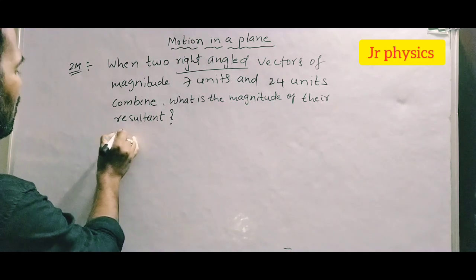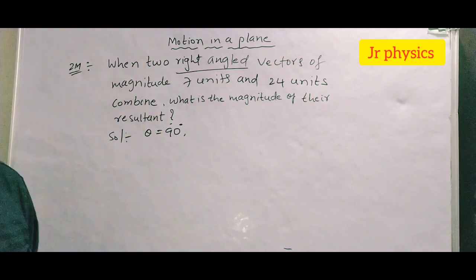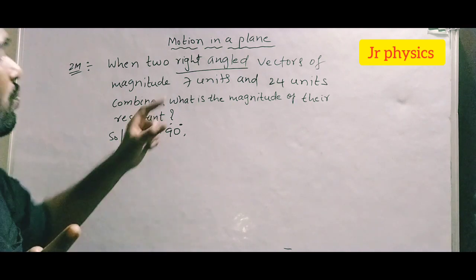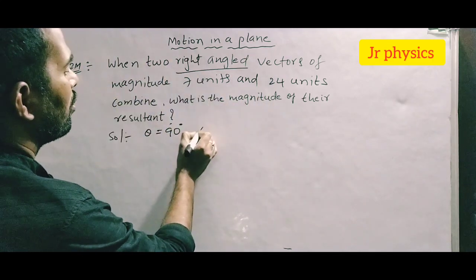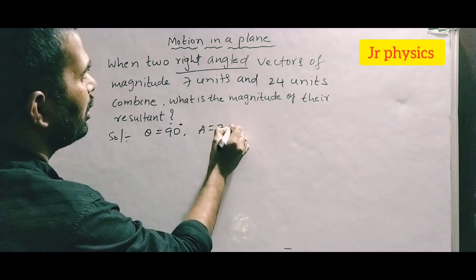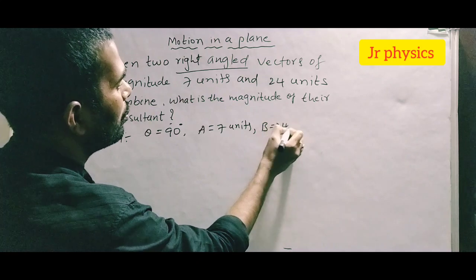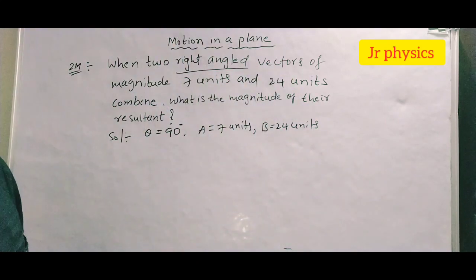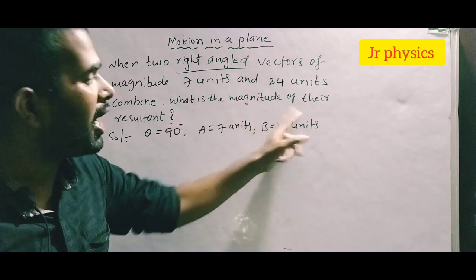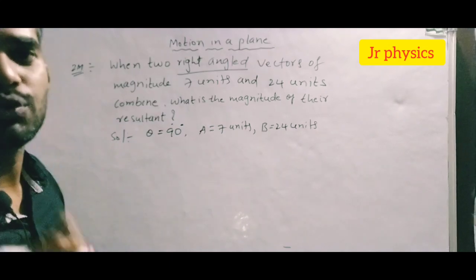Two vectors are given: the magnitude of the first vector A is 7 units, and the magnitude of the second vector B is 24 units. We have to find out the magnitude of their resultant.